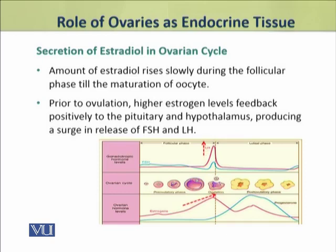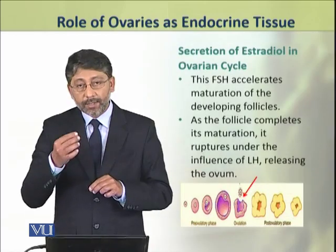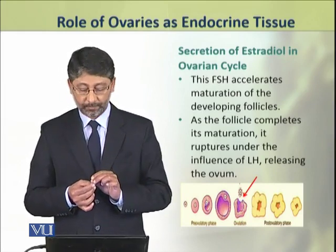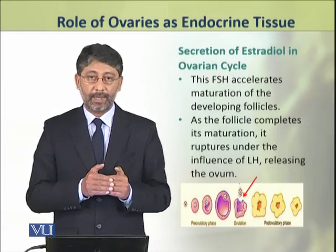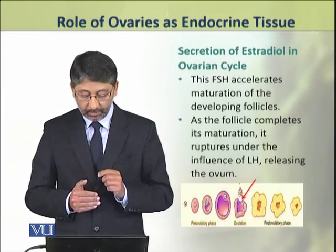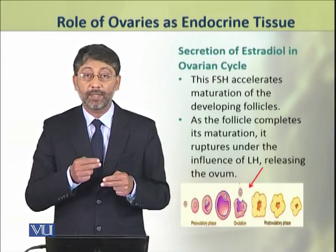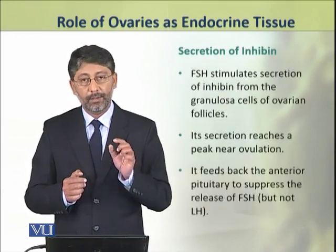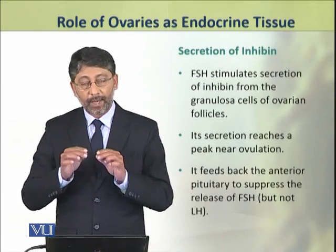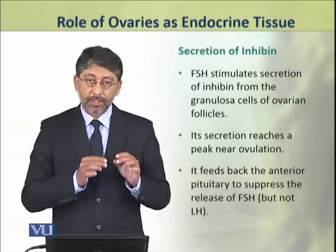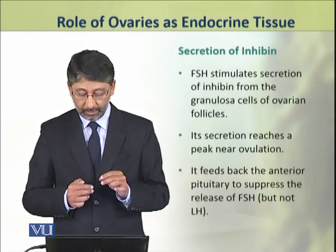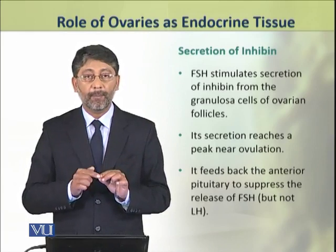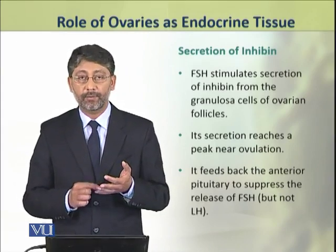These estrogens feed back positively to the pituitary and hypothalamus, resulting in a surge in both FSH and LH. This rise in FSH and LH accelerates the maturation and development of follicles. When the follicle completes its maturation, it ruptures — the stimulus for rupturing comes from luteinizing hormone — and as a result, the egg or ovum is released. After ovulation, FSH stimulates the secretion of inhibin from granulosa cells in the ovary follicles.